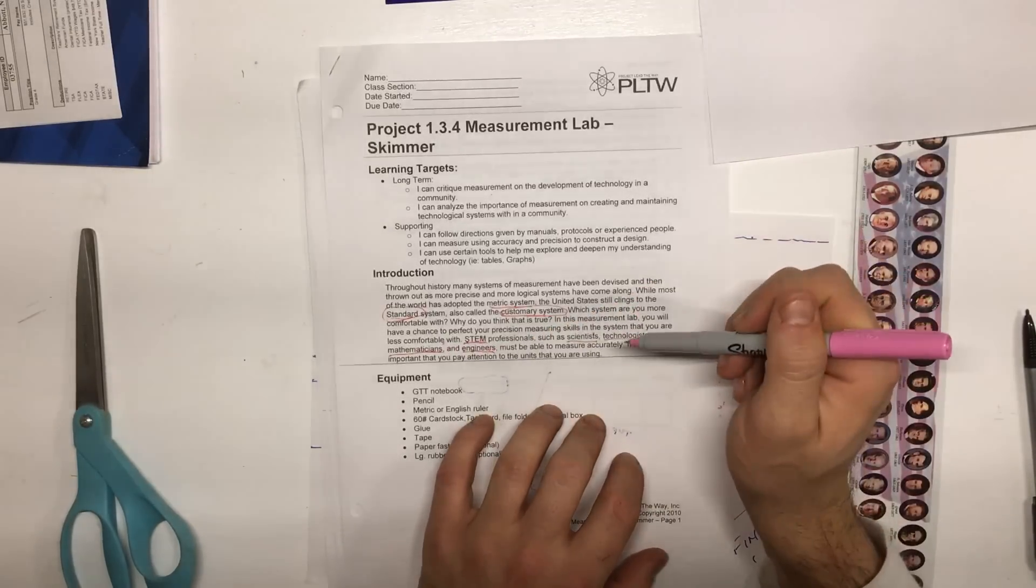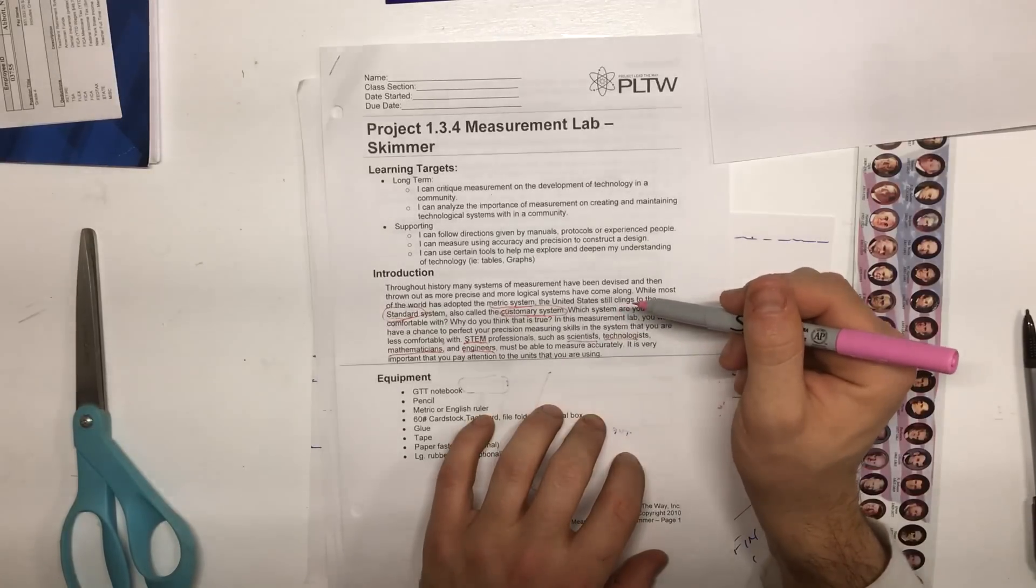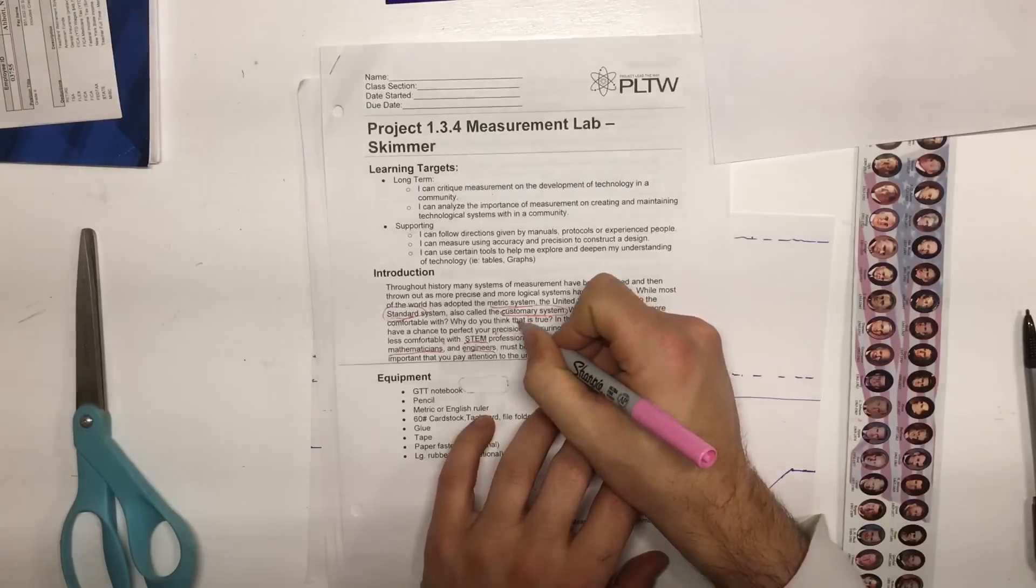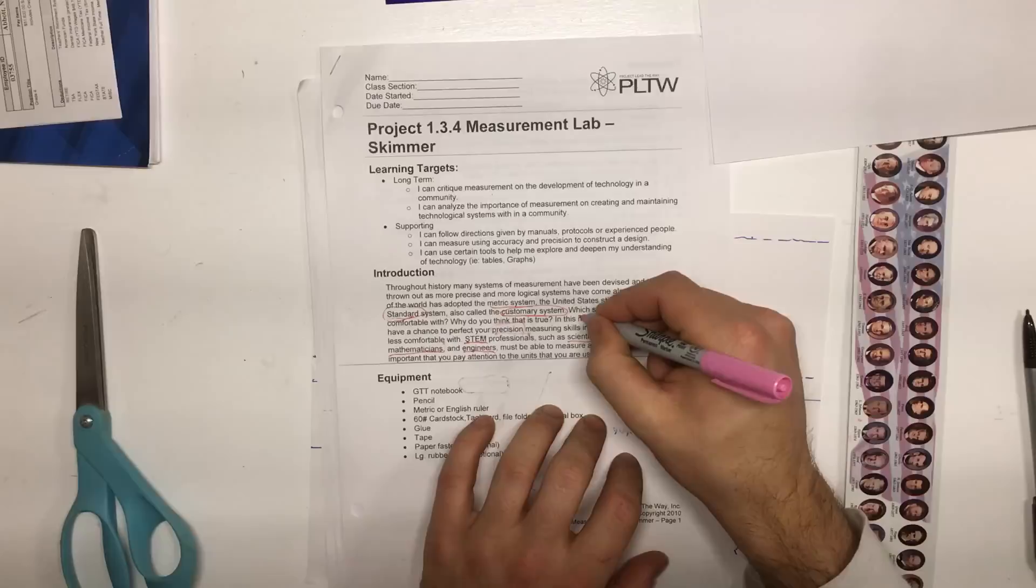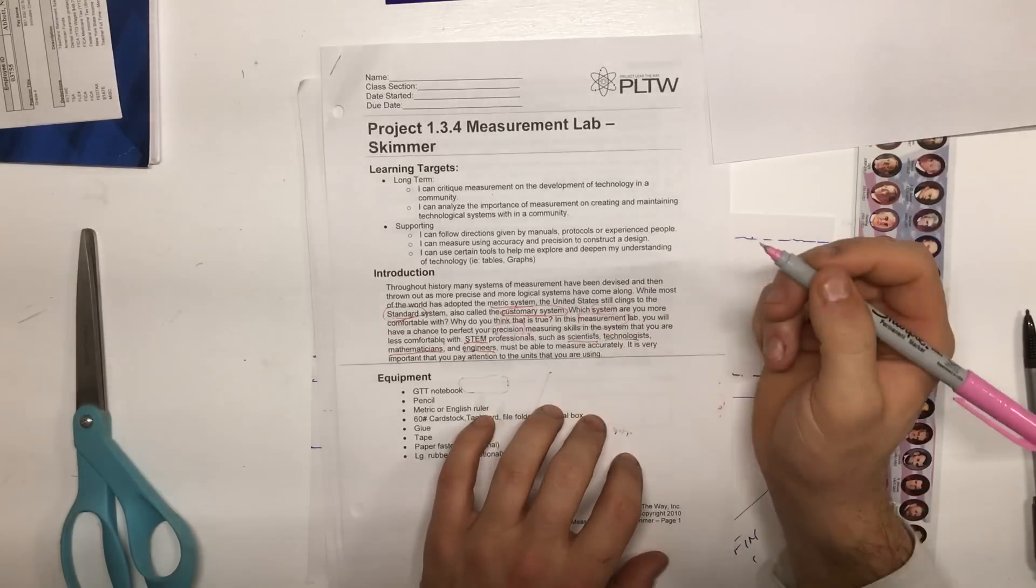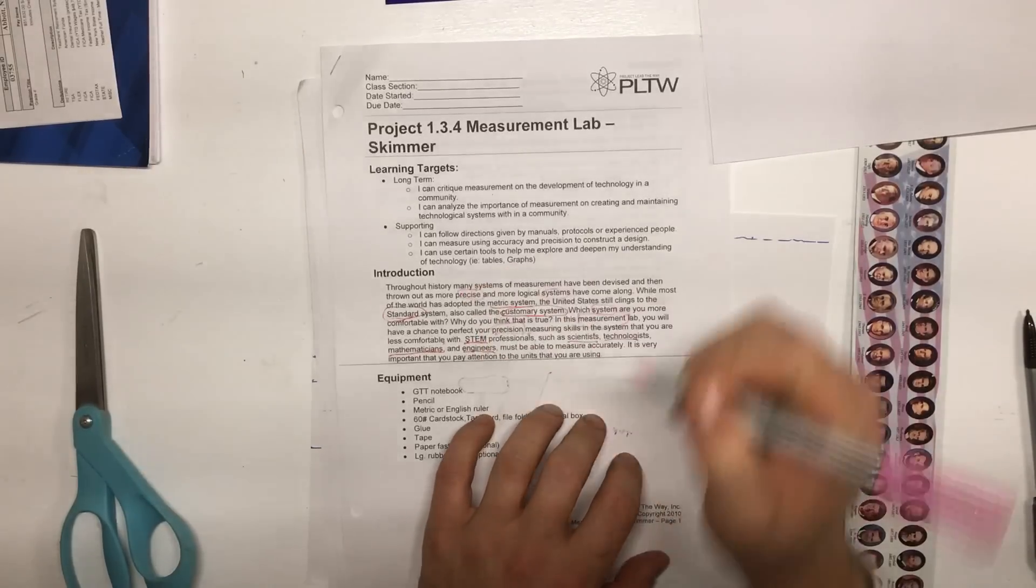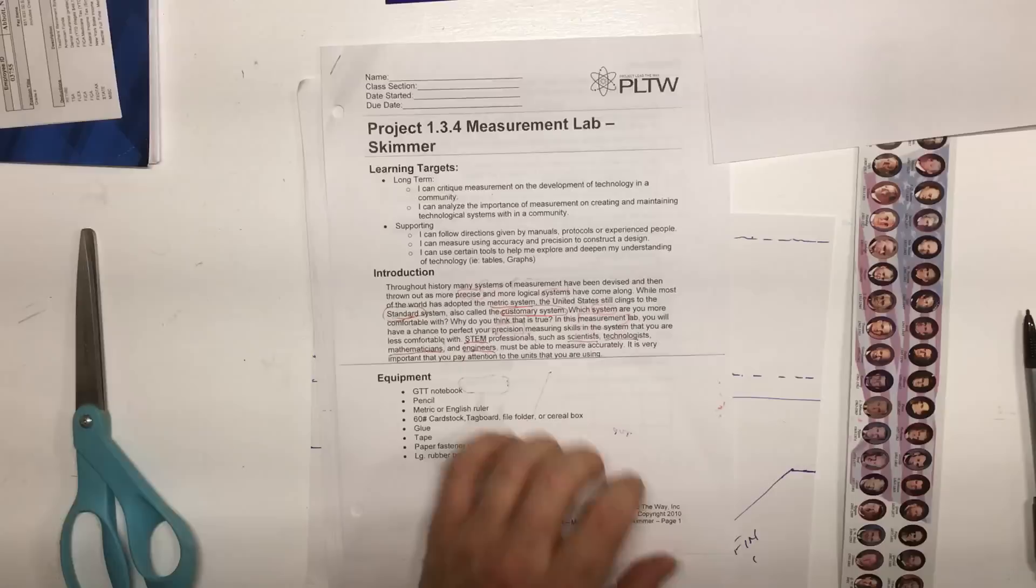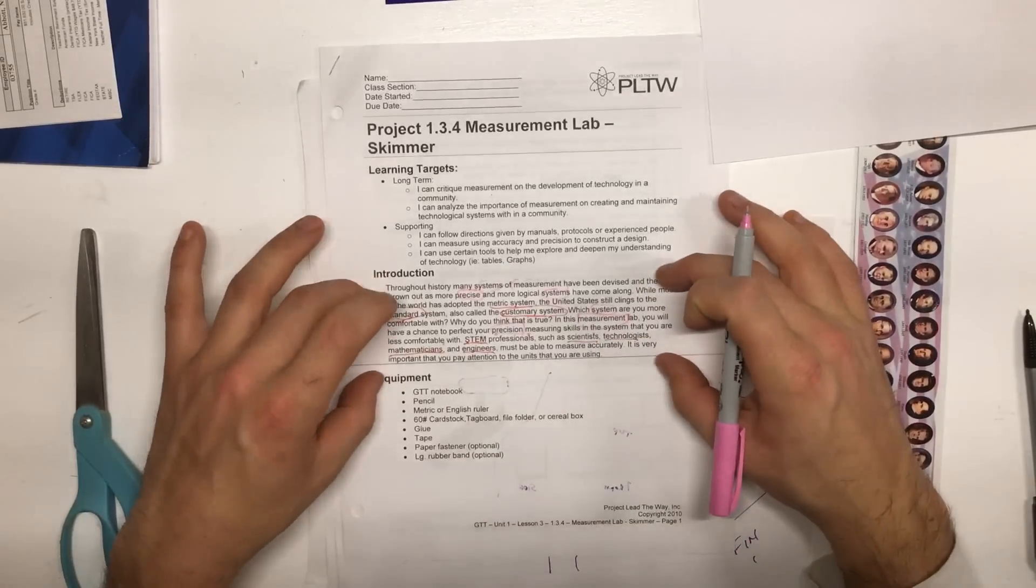I also had a few students talk about analyze, which I can't really find right now, but that's a very good one. Precision would also be another one we should probably circle. And measurement, of course. System, precise, measurement system. So as you can see there's a ton of vocabulary words just in the small introduction paragraph.